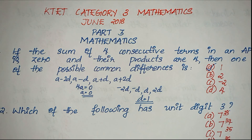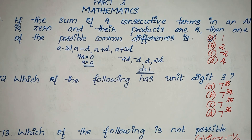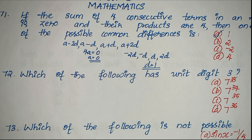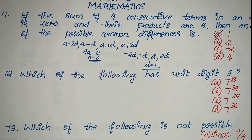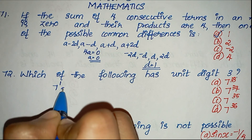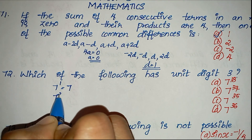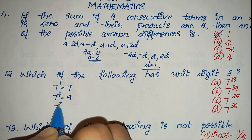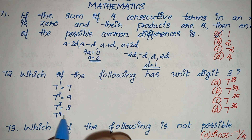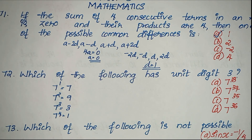Moving on to question number 72: which of the following has unit digit 3? We look at the powers of 7. 7 raised to 1 is 7, 7 raised to 2 is 49 — unit digit 9, 7 raised to 3 has unit digit 3, 7 raised to 4 has unit digit 1. We rotate this cycle of 7, 9, 3, 1.